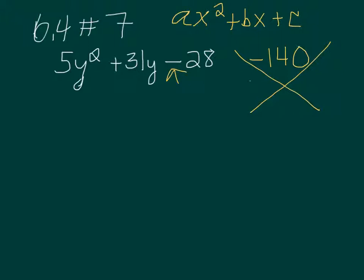Now if it has to add up to be positive 31, then the larger number must be positive. So we're going to have one negative number, one positive number. That's how you get a negative 140. So for example, positive 14 and negative 10 multiply to be negative 140, but they don't add up to be 31. So we're going to erase those.